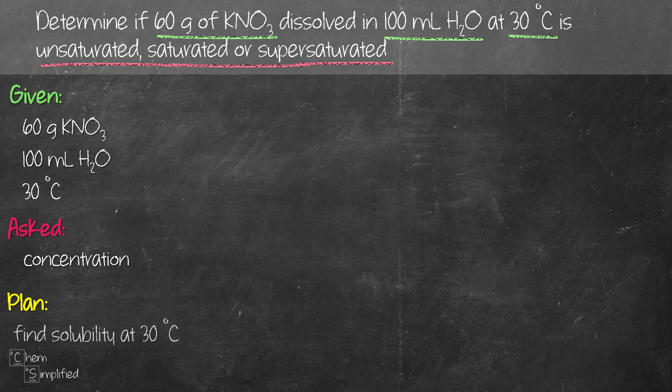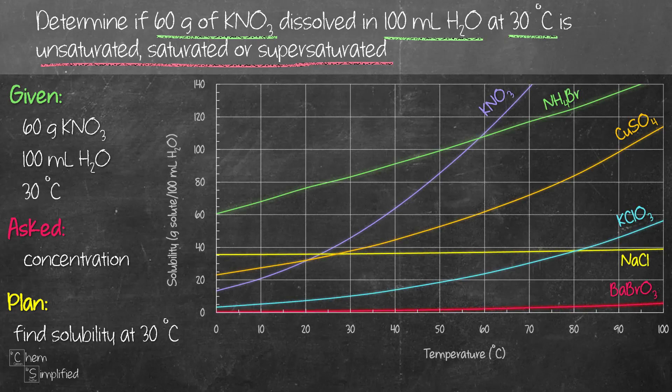So our plan is to first find the solubility of potassium nitrate at 30 degrees Celsius.